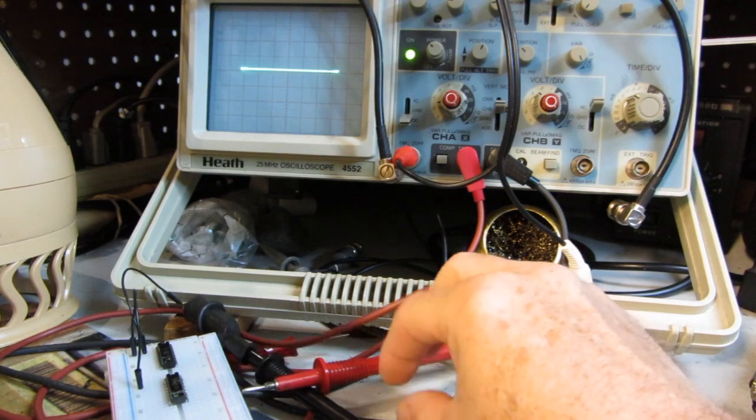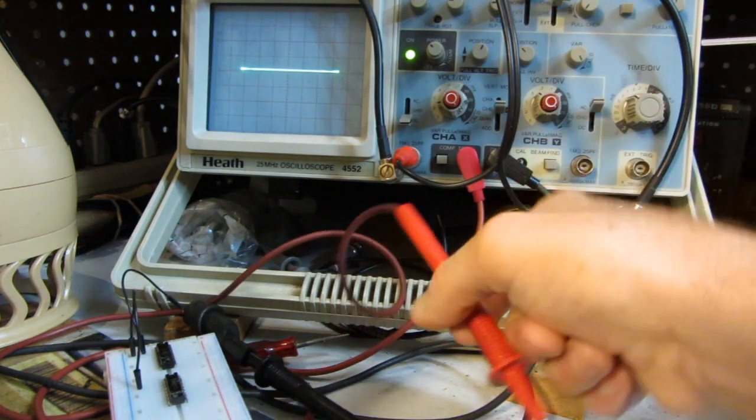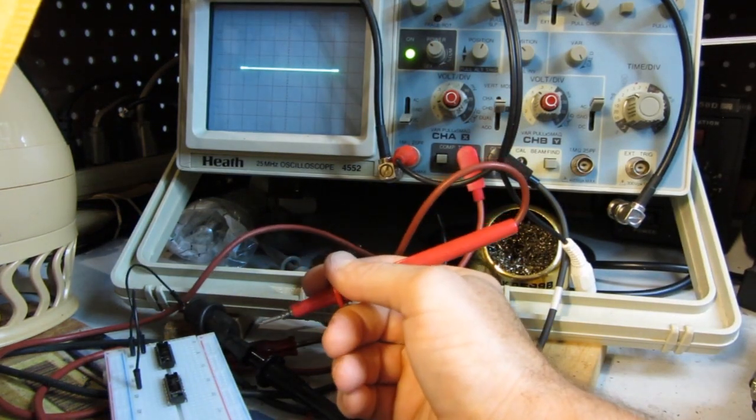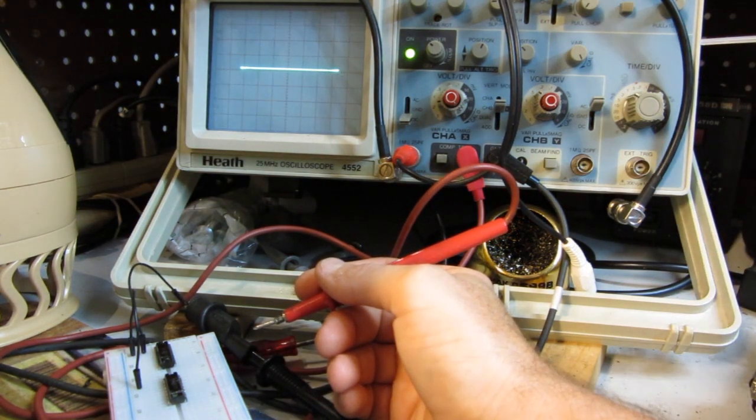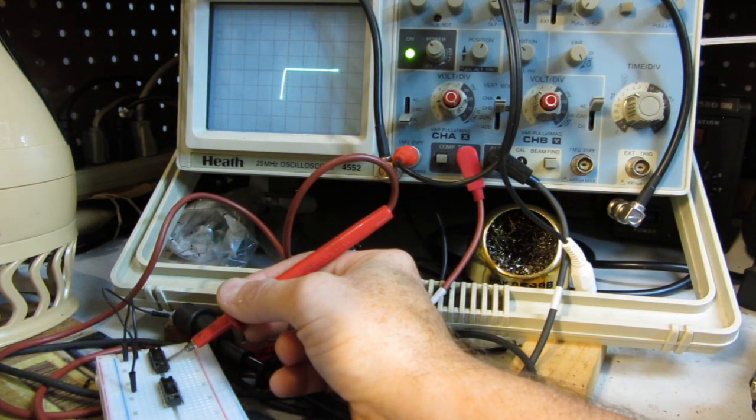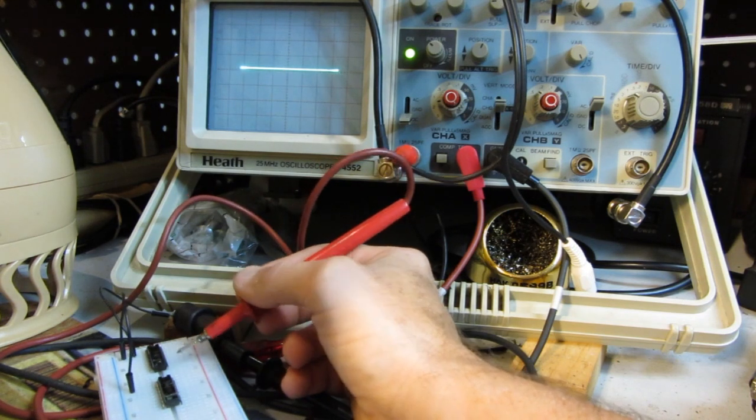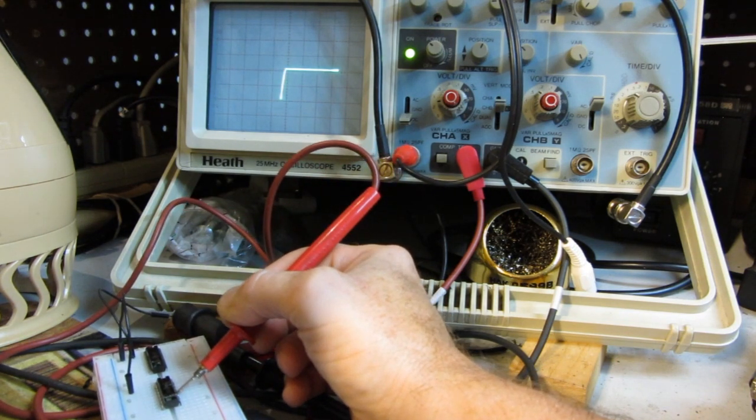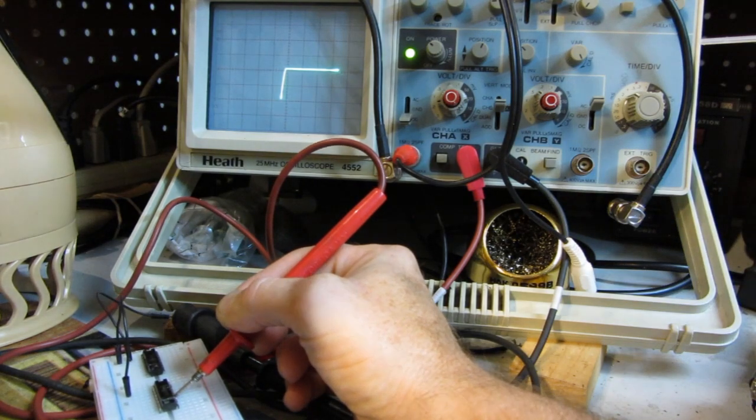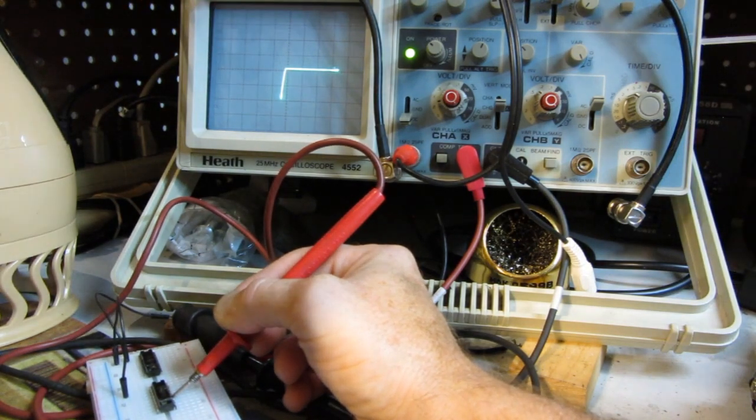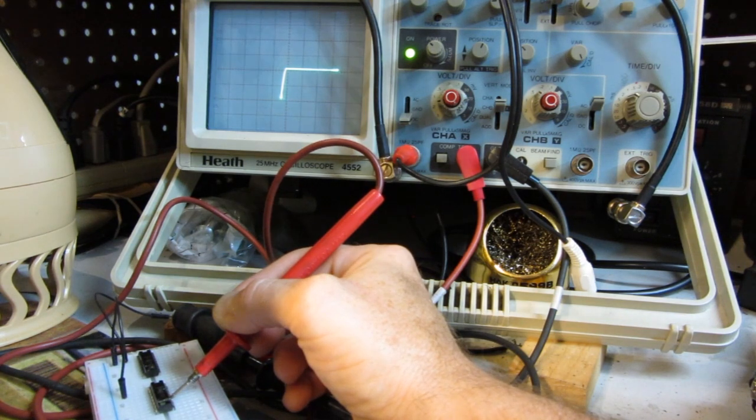We're back here doing the bench test on the display ICs that I pulled out, and hopefully we can get everything into the camera shot here. This is what I think is the good IC, and this is the other one. Now, if you notice, this line up here, the top side of the trace, is starting to flicker.